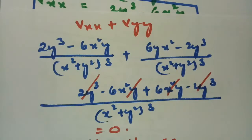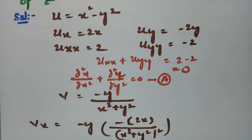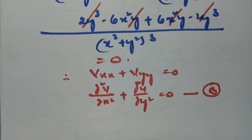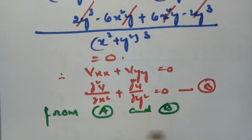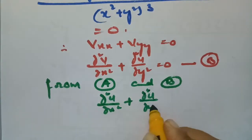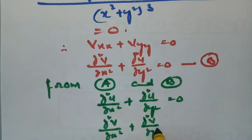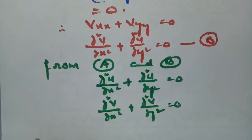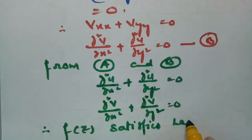From equations (a) and (b), we have ∂²u/∂x² + ∂²u/∂y² = 0 and ∂²v/∂x² + ∂²v/∂y² = 0. Therefore, the function f(z) satisfies the Laplace equations.